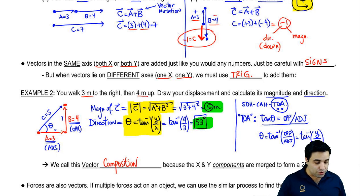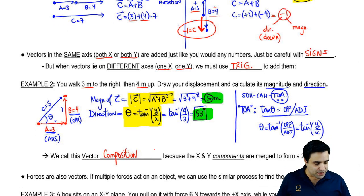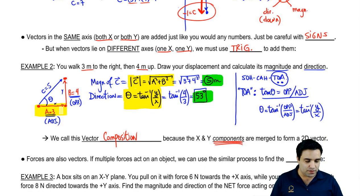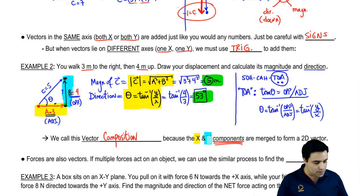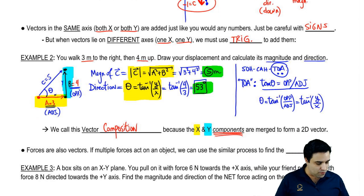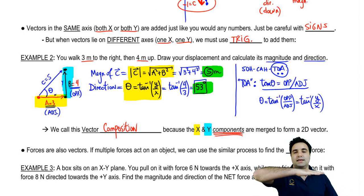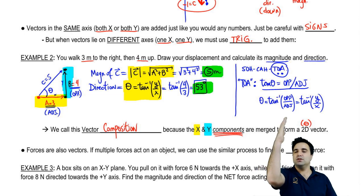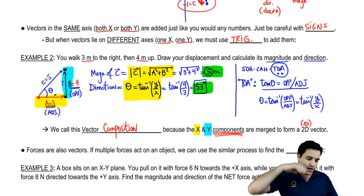This process we call vector composition. The name doesn't matter as much as knowing how to do it, but that's what it's called. And it's called that because the x and y components are being merged. This is called the x component of the vector. And this is called the y component of the vector. I like to think of these as the legs of the vector. So they're merged to form a two-dimensional vector. What I mean by two-dimensional is that it's going at an angle like that. So that has an angle. It doesn't sit flat in the x or flat in the y. It goes at an angle.